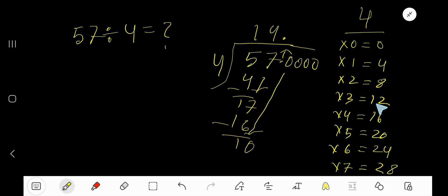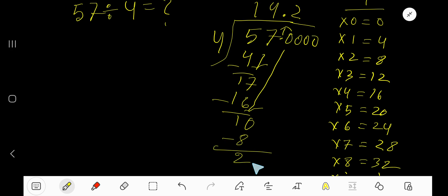4 goes into 10 how many times? 3 times is 12, which is greater, so 2 times. 2 times 4 is 8, subtract to get 2. Bring down another zero.